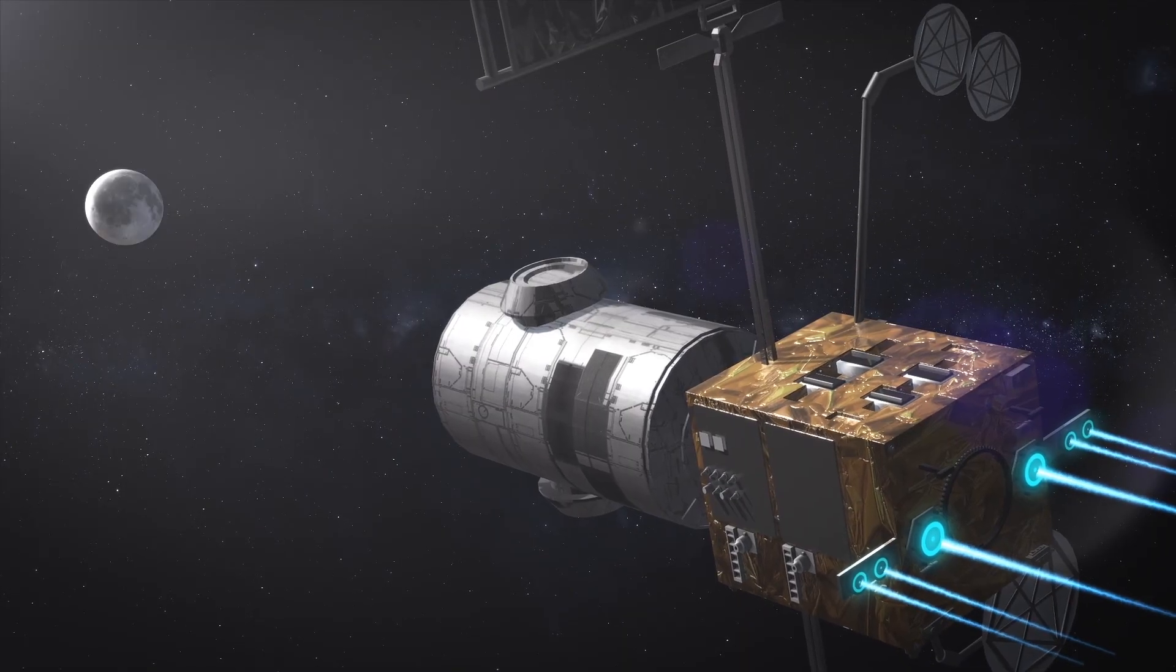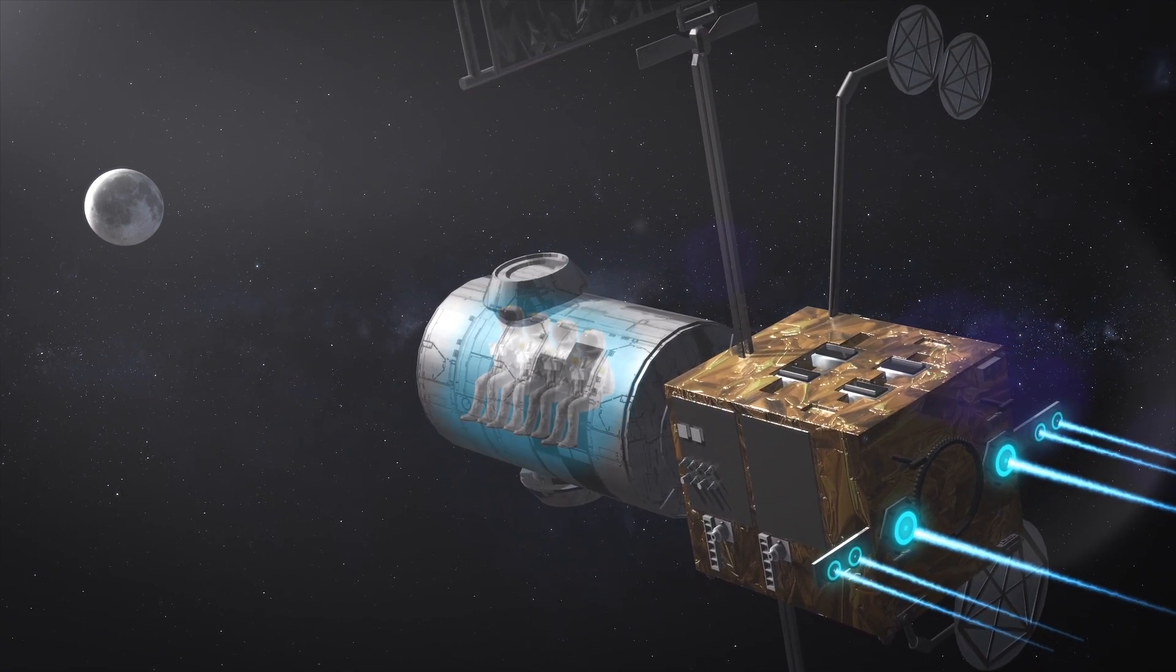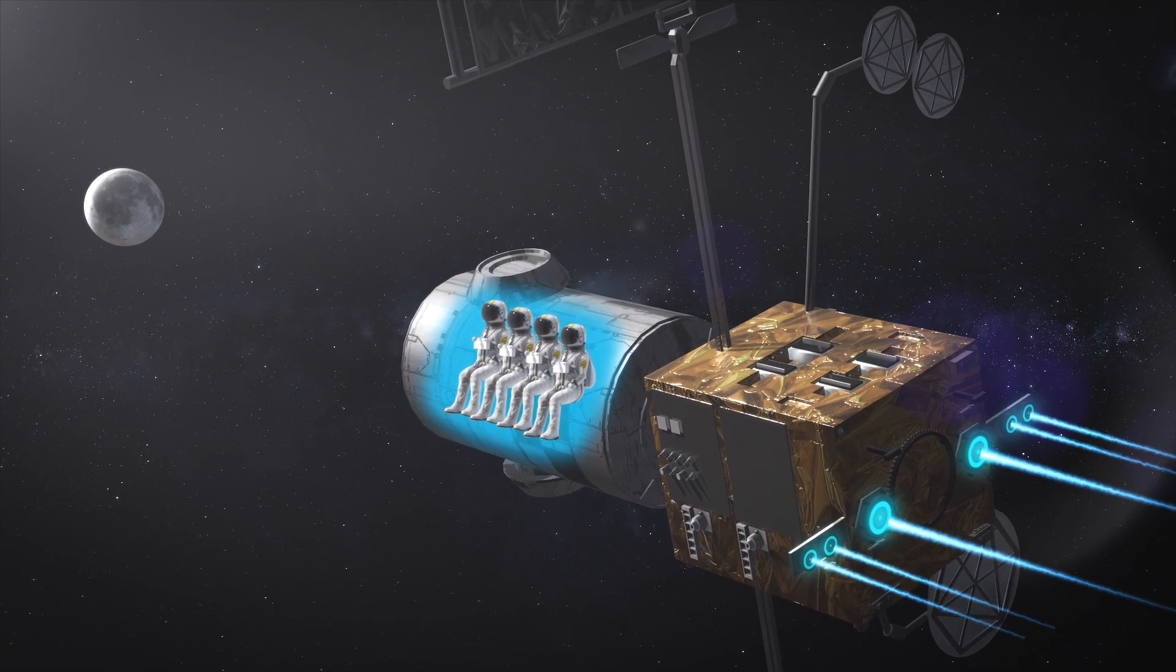The process will begin in 2024 with the dual launch of the power and propulsion element of the station and the habitation and logistics outpost, which will initially provide living space for astronauts manning lunar missions, according to NASA.